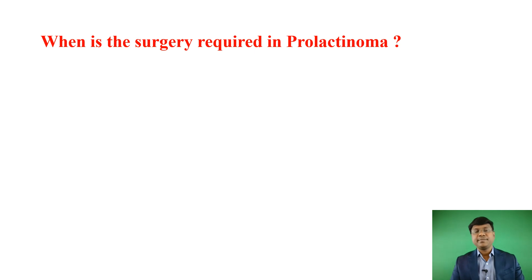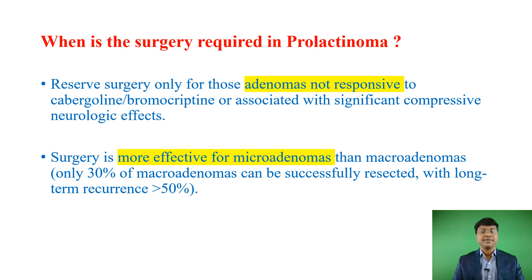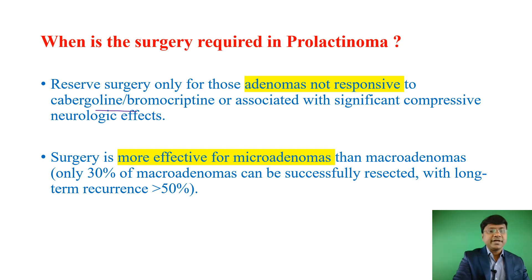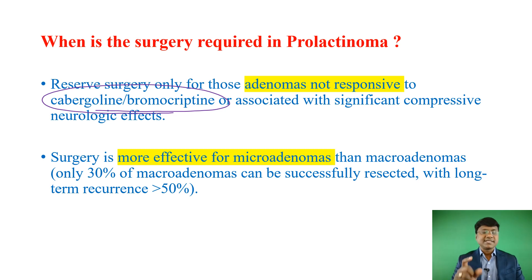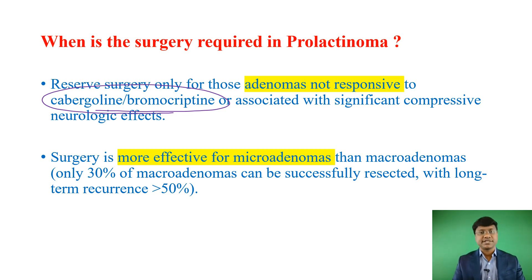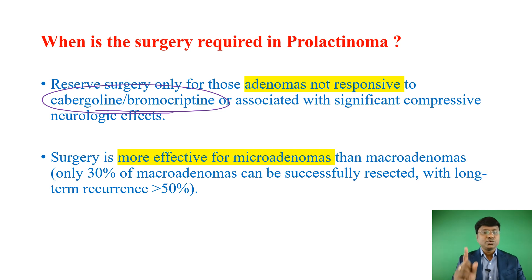When is surgery required in prolactinoma? Surgery is advised in individuals who are refractory or not responding to cabergoline or bromocriptine. Surgical resection is mostly advised in macro adenomas because they have a pressure effect on surrounding structures, causing visual impairment due to compression of the optic chiasma. Those individuals not responsive to medical management are referred for surgical resection.